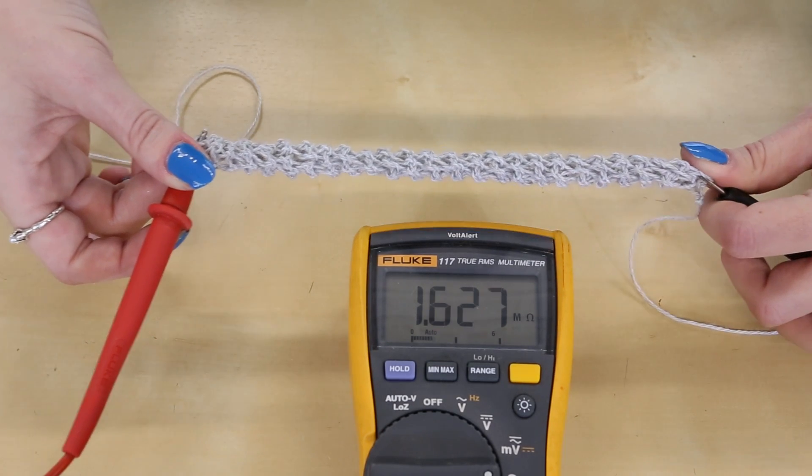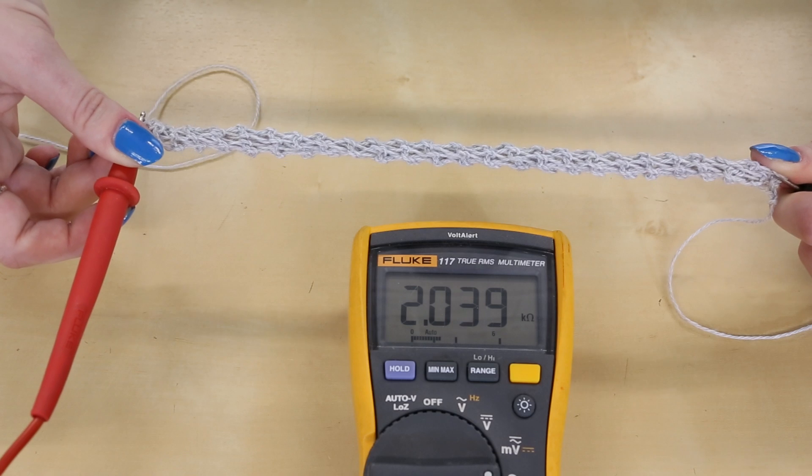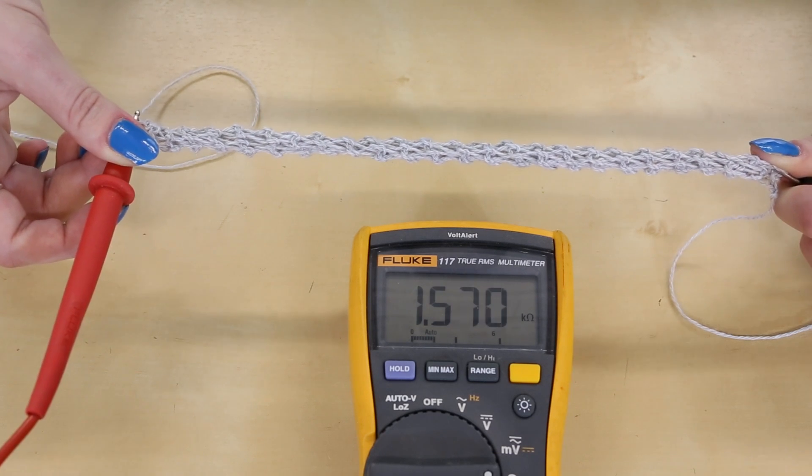When you stretch the sensor out, the resistance drops dramatically, because you're pulling the stainless fibers into closer, tighter contact. This change in resistance makes it possible to measure when and how much the sensor is being stretched, which can be a lot of fun to apply to body movement.